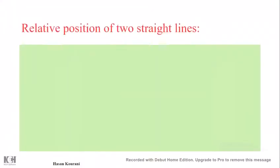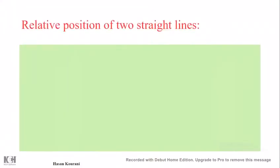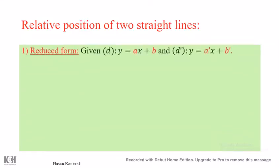In this part we are going to see how to find the relative position of two straight lines — which means the relation between two straight lines in different forms. A straight line has three forms: reduced, standard, and parametric.